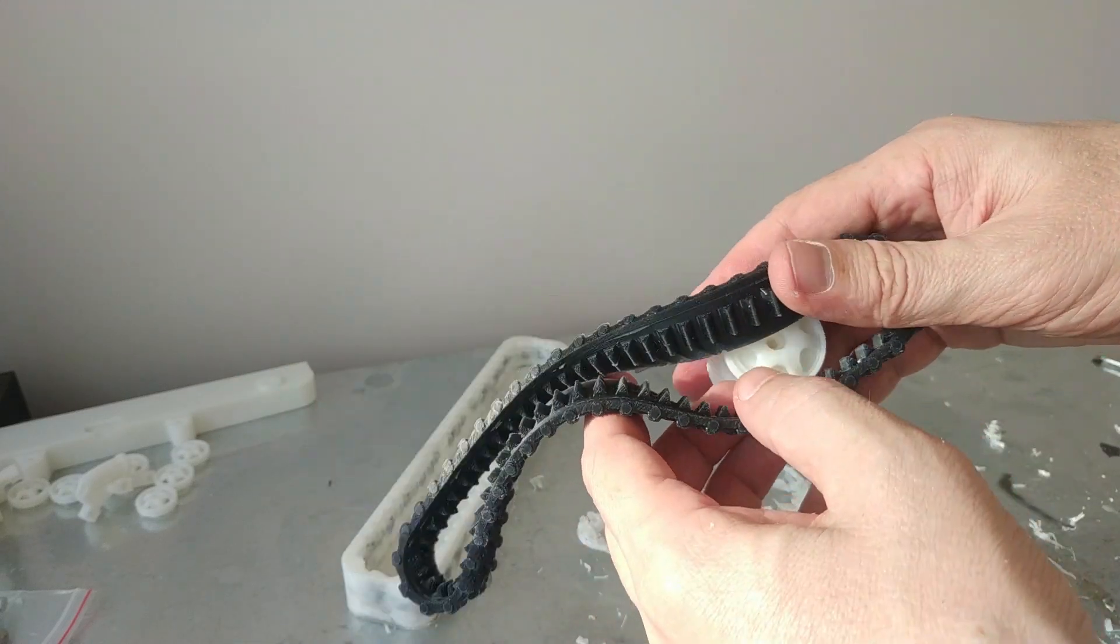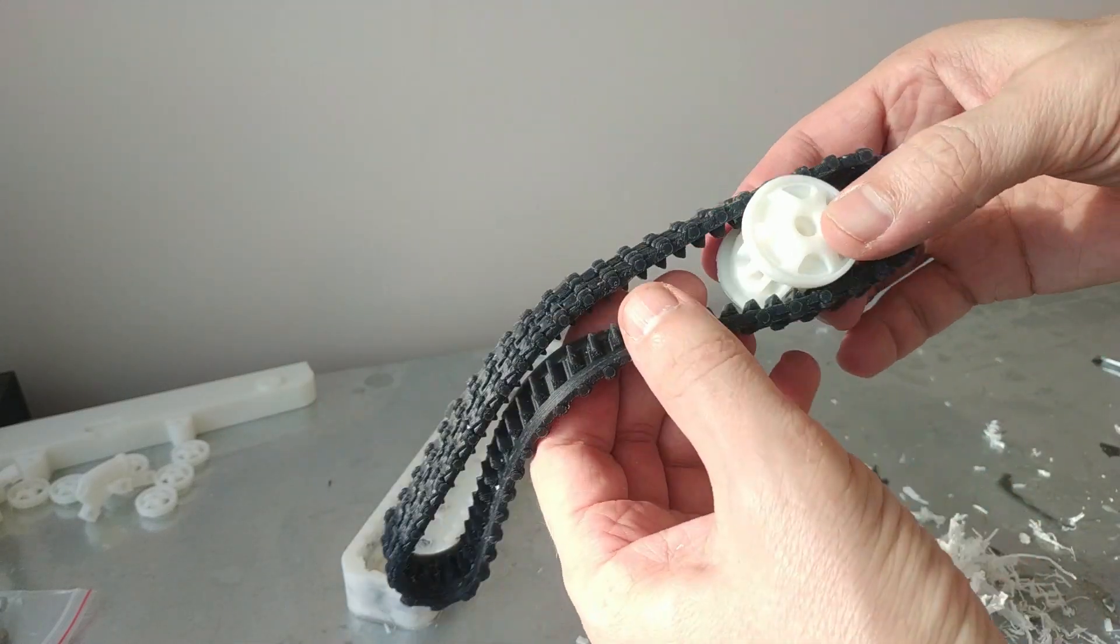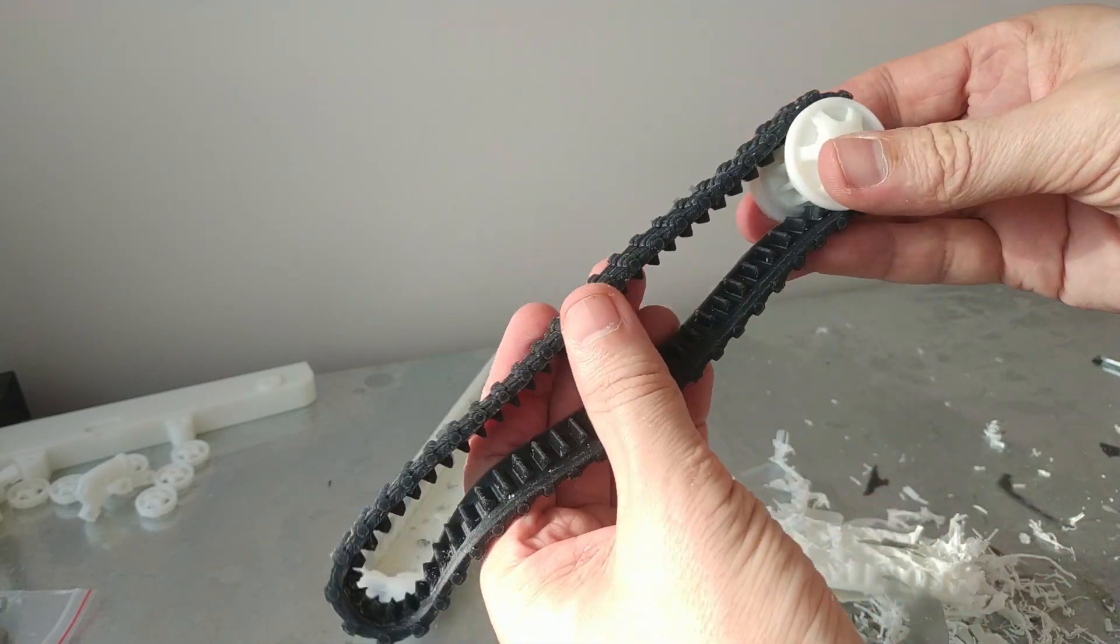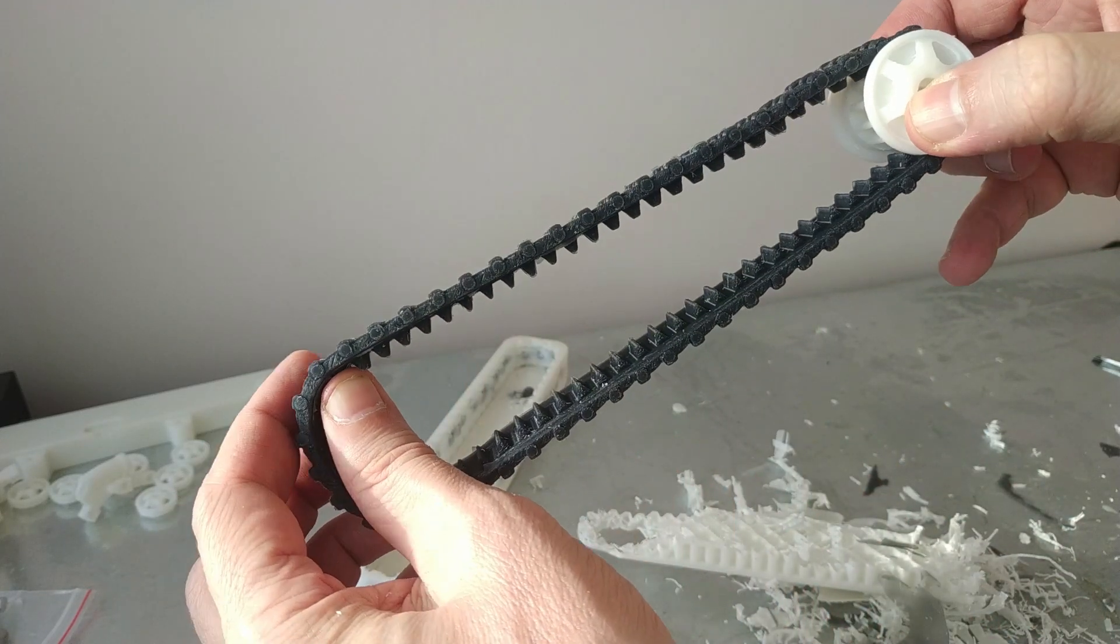In the next video you will see how this rubber track for RC will look on the experimental chassis. Subscribe, it will help develop the channel and do more experiments with silicone.